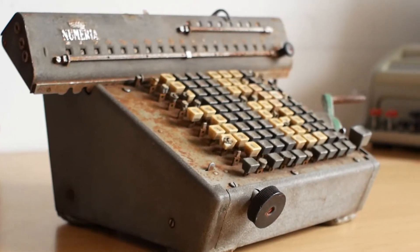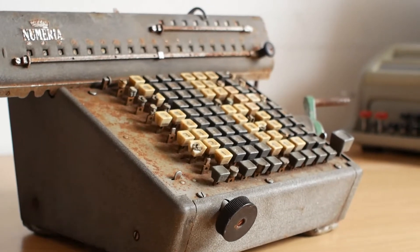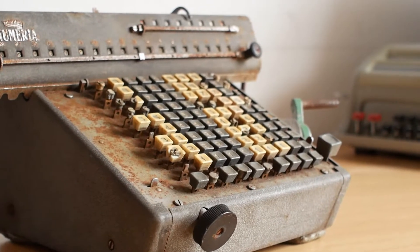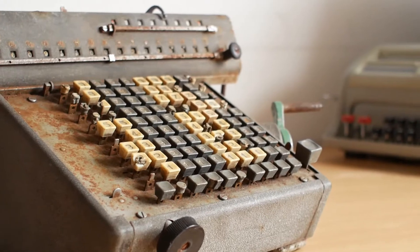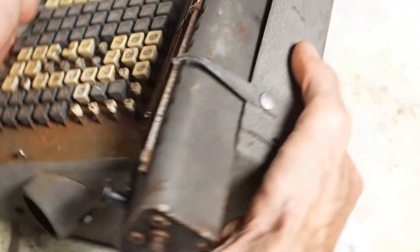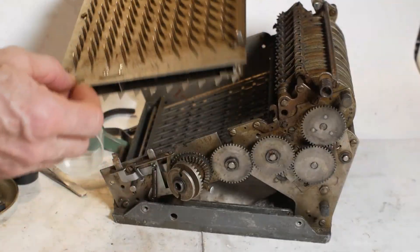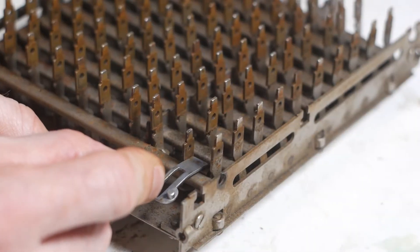For today's video we're taking a look at a Lagomassino Numeria Model 9203 mechanical calculator, made in Italy in the 1950s or 60s. In part 1 we opened up the machine and freed off the main mechanism, also repairing a couple of damaged components in the keyboard assembly. I'll put a link to that video on screen about now.